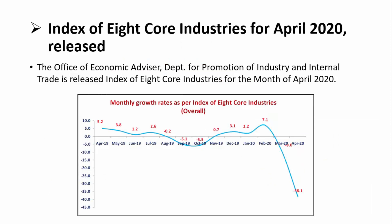Moving on to our first article: the Index of Eight Core Industries for 2019-20 has been released by the Office of Economic Advisor up to April 2020. The Department for Promotion of Industry and Internal Trade has also collectively released the Index of Eight Core Industries for the month of April. The graph clearly shows the difference in growth.